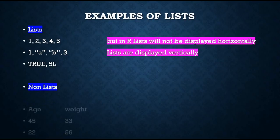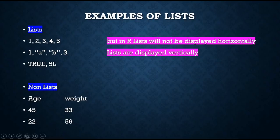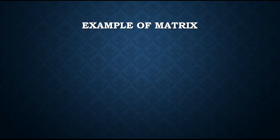Now some non-list examples. This is an example of a non-list. Why is this considered a non-list when it contains both character data as well as numeric data? Because it contains two-dimensional data — rows as well as columns. By definition, a list can have only one dimension. Here in this example the data contains multiple dimensions, that is two dimensions: rows and columns. So it cannot be considered as a list in R.